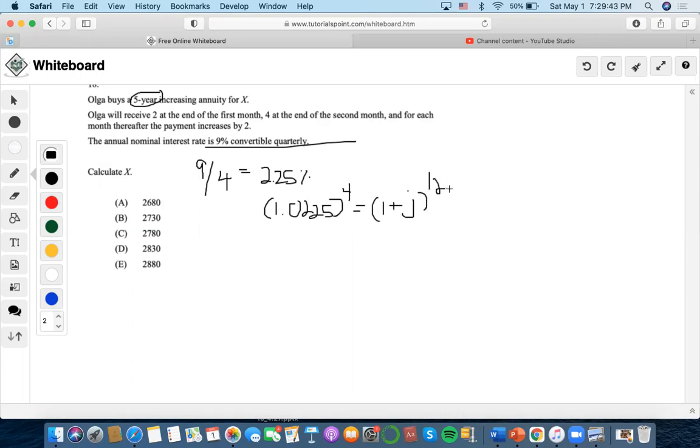Okay, so we're going to do 1.0225 to the 4, then we're going to do it to the power of 1 over 12, and then minus 1. Okay, so J is equal to 0.007444.